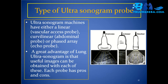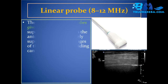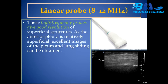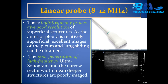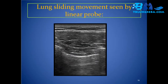Linear probe (8–12 MHz): these high-frequency probes give good resolution of superficial structures. As the anterior pleura is relatively superficial, excellent images of the pleura and lung sliding can be obtained. However, the poor penetration of high-frequency ultrasonogram and the narrow sector width mean deeper structures are poorly imaged. Lung sliding movements are well seen by the linear probe.